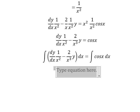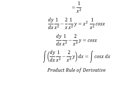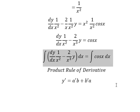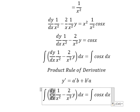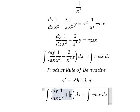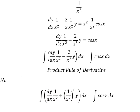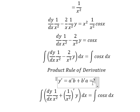So we can use the product rule of the derivative. We have the first derivative of y equals the first derivative of a multiplied by b, plus the first derivative of b multiplied by a. So we have the first derivative of a multiplied by b, and the first derivative of b multiplied by a. So the integral of this one we have y equals b times a.